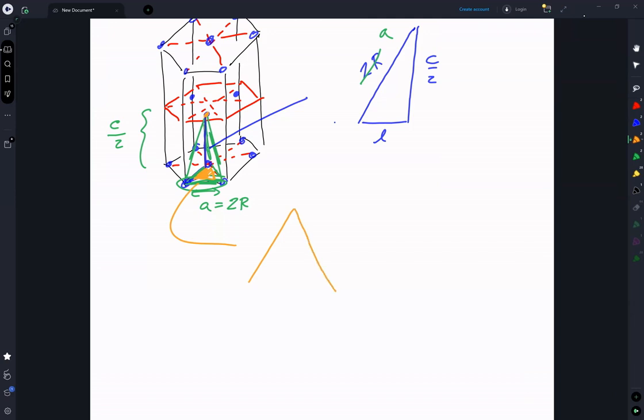This equilateral triangle is A, A, A. If we draw a set of perpendicular bisectors, they connect in the middle. So for example, we know that each of those is 60 degrees, which means that this is 30 degrees.